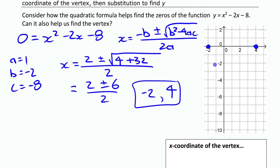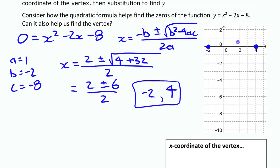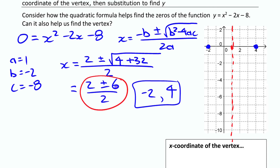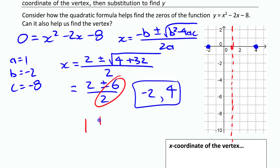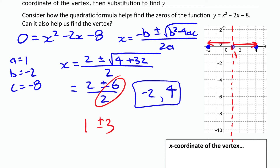If you know anything about parabolas, you know they're symmetric. If you know those two x-intercept points, you know where the vertex is — it has to be halfway in between them, on the axis of symmetry. That value is where the vertex must lie, because the shape of the parabola is symmetric. Now if I divided each part of the numerator separately by 2 instead of combining them first, I get 1 ± 3. So 1 is the x-coordinate of the vertex, and ±3 is how far the x-intercepts are from it.